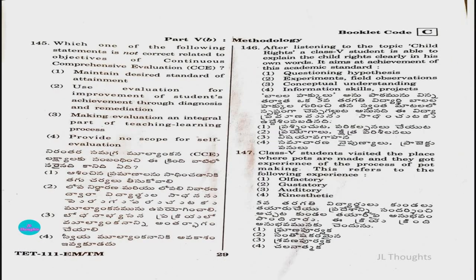Now, methodology questions. Question number 145: Which statement is not correct related to objectives of Continuous Comprehensive Evaluation (CCE)? Option 1: maintain desired standard of attainment. Option 2: use evaluation for improvement through diagnosis and remediation. Option 3: making evaluation an integral part of teaching-learning process. Option 4: provide no scope for self-evaluation. Option four is not correct; the remaining three are correct.